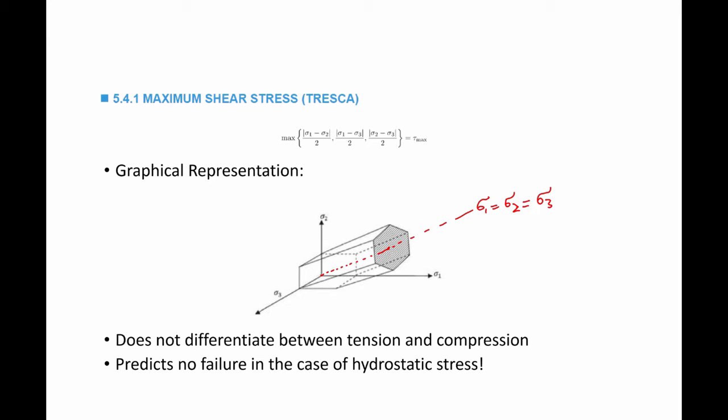Any point inside that hexagon means we're in the safe zone. Two important notes: this failure criterion does not differentiate between tension and compression — if I have a material under sigma yield or under negative sigma yield, both would give the same onset of failure. Another important note is that this material model does not predict failure in the case of hydrostatic stress. If sigma 1 equals sigma 2 equals sigma 3, the maximum difference will always be zero, and therefore the material will never be predicted to fail.